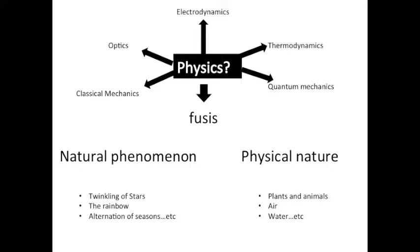Nature is of two types, natural phenomena and physical nature. Natural phenomena means an event, and physics tries to explain this event, like the twinkling of stars, for example. Physical nature, on the other hand, is something like matter, like plants, or the air, or water. So that's the basic part of it.